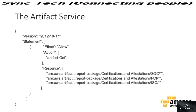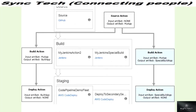You could define the version, the statement effect — allow or deny — the action, the 'get artifact', the resources, and the ARN (Amazon Resource Name) for respective artifacts that you can attach to different services. You have different stages of development for source code — build and staging — and artifact roles for documentation in the DevOps or software development lifecycle.